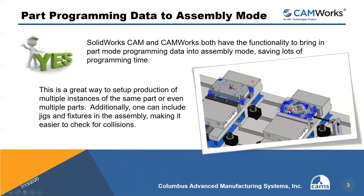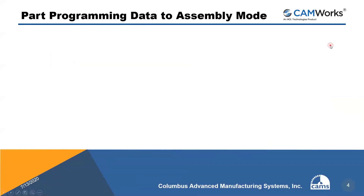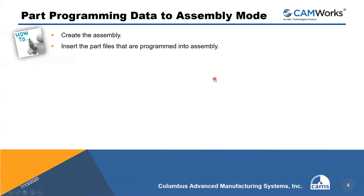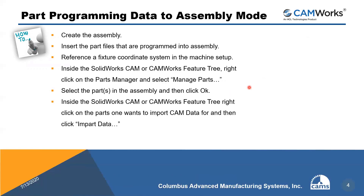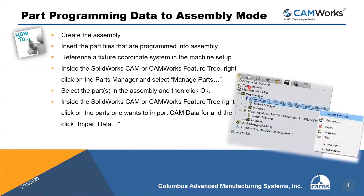This is a great way to set up production of multiple instances of the same part or even multiple parts. Additionally, one can include jigs and fixtures in the assembly, making it easier to check for collisions. Here's a quick how-to: create an assembly, insert the programmed part files, reference a fixture coordinate system in the machine setup, then inside the SOLIDWORKS CAM or CAMWorks feature tree, right-click on the Parts Manager and select Manage Parts. Select the parts in the assembly and click OK. Then right-click on the part you want to import CAM data for and click Import Data.